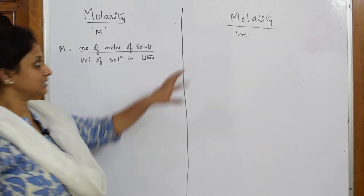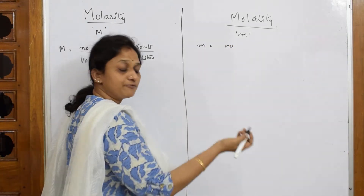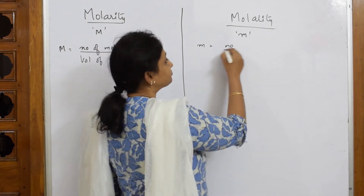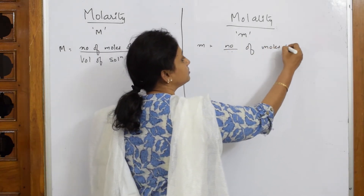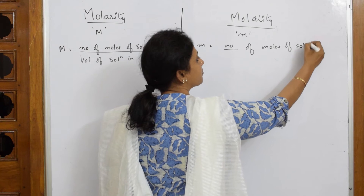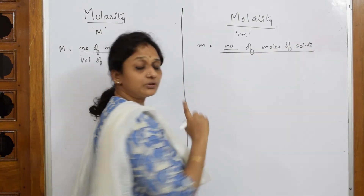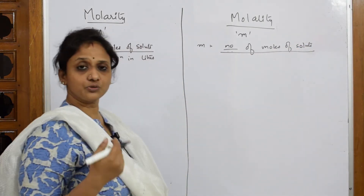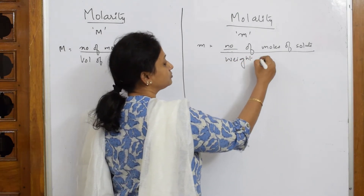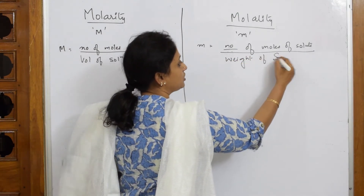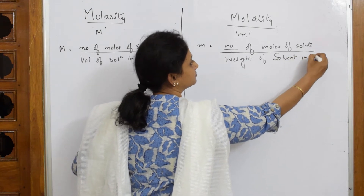Now let us write molality. The numerator is the same for both: number of moles of solute. The denominator for molality is the weight of solvent in kilograms.